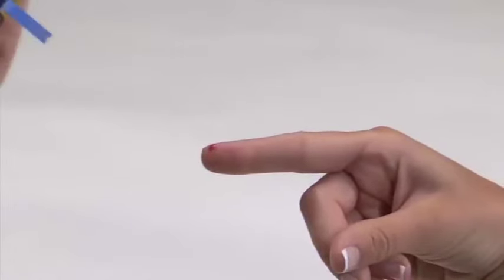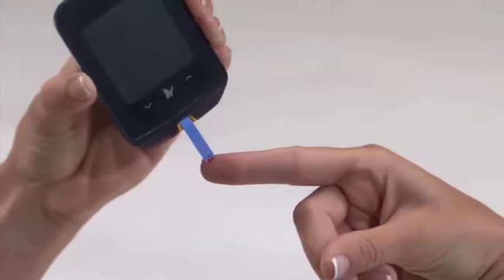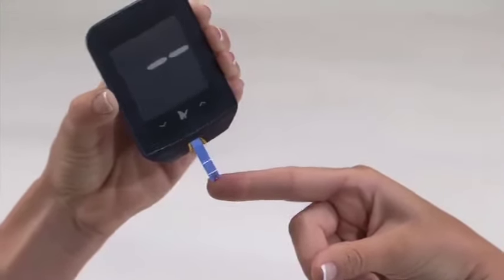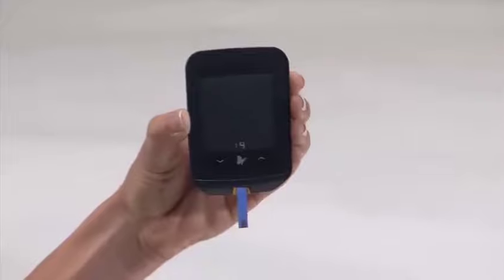Apply the blood drop to the white area at the end of the test strip until you see three dashes on the meter. This means you have applied enough blood.